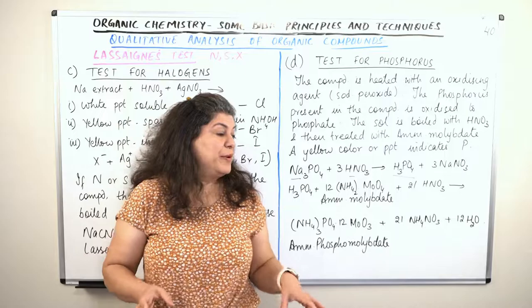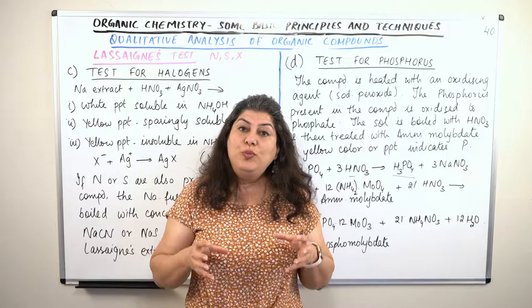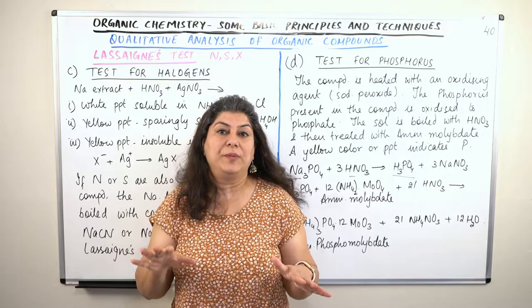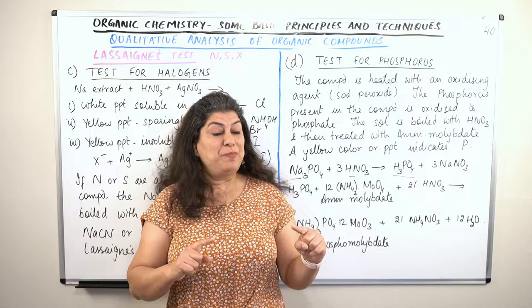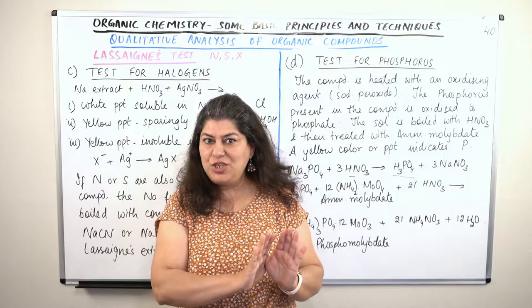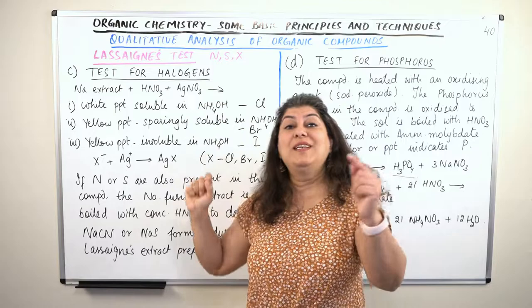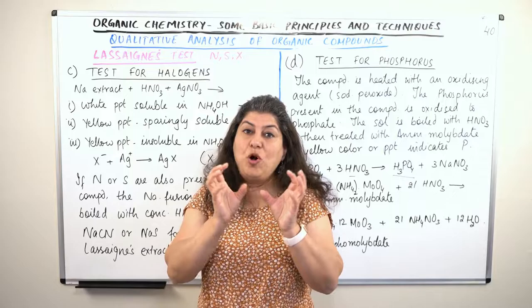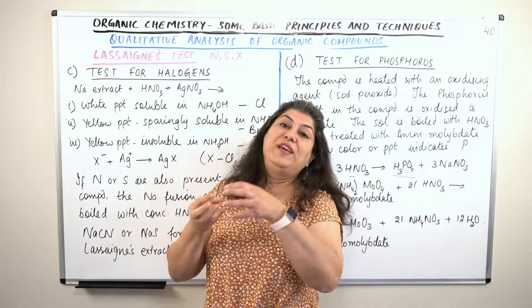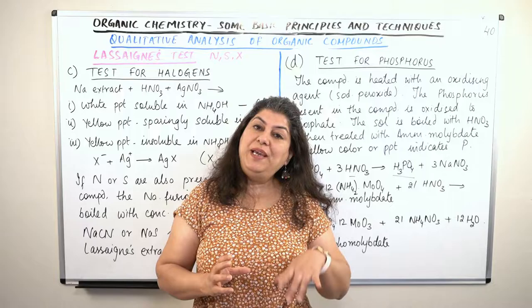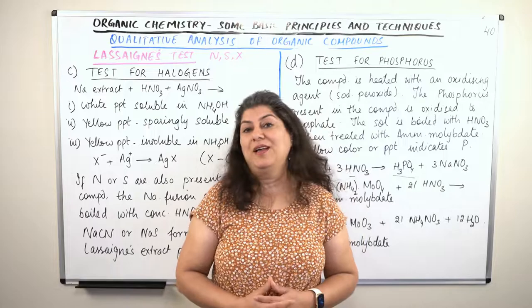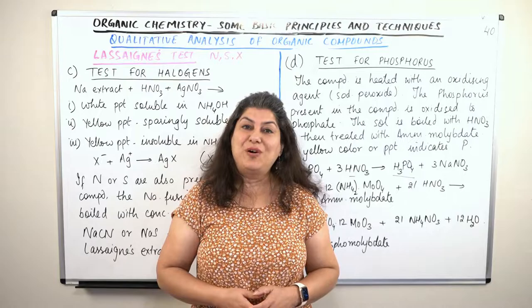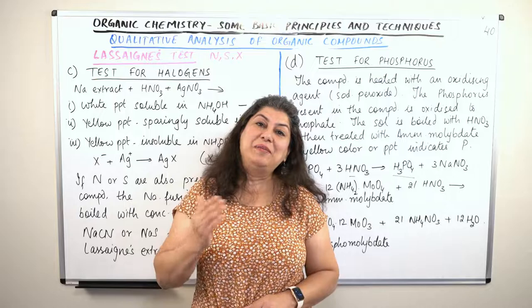This is how we determine the presence of halogens and phosphorus in organic compounds. With this, the qualitative analysis of the organic compound finishes. Now you know what elements are present in the compound. The next step is to find out the percentage composition — the quantitative analysis — to determine the quantity of each element. In the next video, we are going to start with the quantitative analysis of the compounds. Thank you for watching, give it a thumbs up, subscribe, and bye-bye for now.